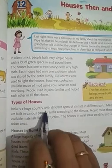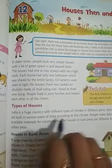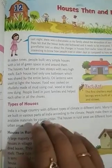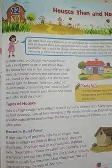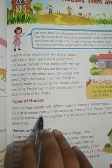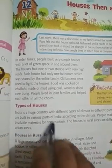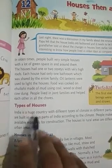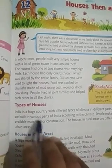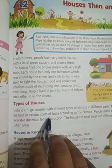India is a huge country with different types of climate in different parts. Jo India hai wo huge hai, badi hai, aur unka climate different part mein different hai. Many types of houses are built in various parts of India according to the climate — climate ke according build karte hain.